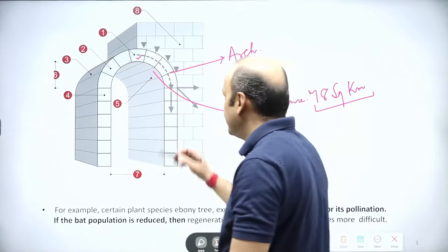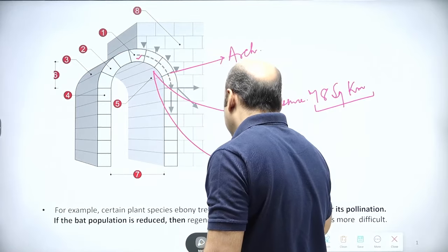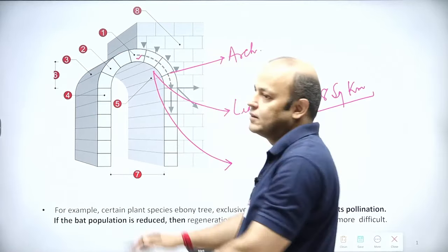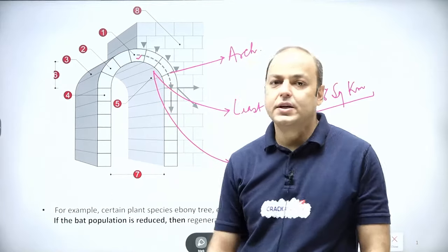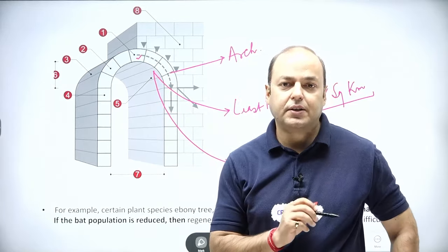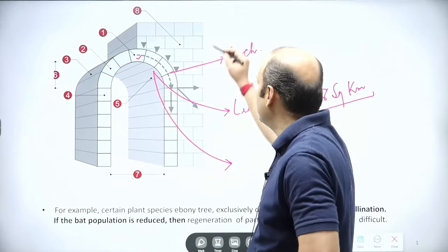And second point, if you remove this stone, the entire arc structure will collapse. So the presence of this stone is extremely important. This stone is known as keystone.